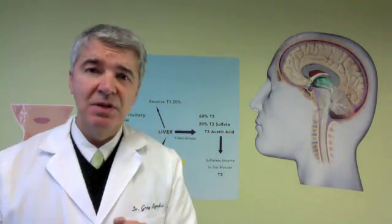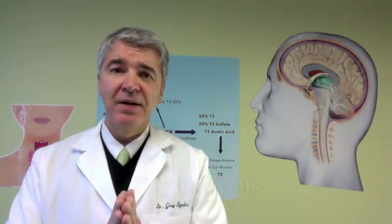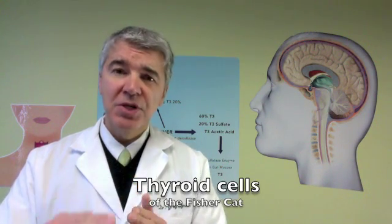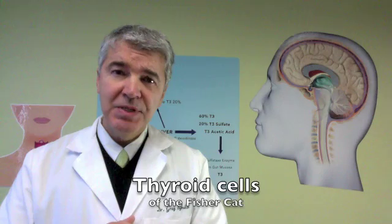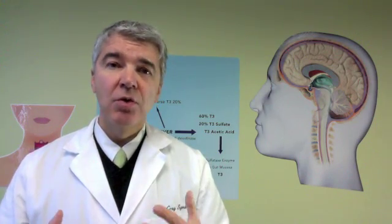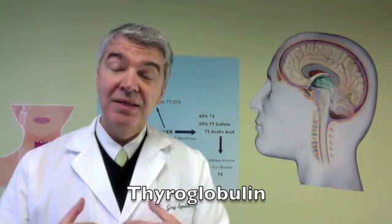They found that the thyroid cells of the fisher cat were heavily impacted, showing a reduction in iodine uptake as well as thyroglobulin production.